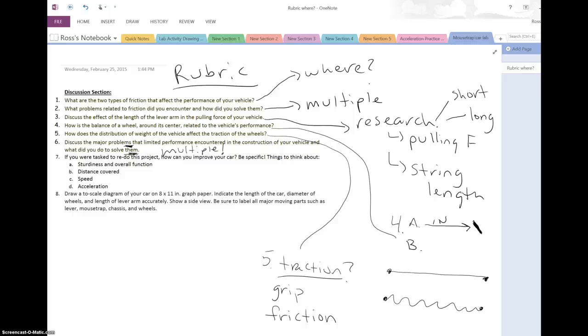Number seven, same idea: if you were tasked to redo this project, how could you improve it? Could you improve its sturdiness or overall function? Could you make it go farther, go faster, or accelerate quicker? Be specific. Don't just say 'yeah, we would change it to go further'—how would you do that? If you want to increase its speed, that's a great goal, but how would you do it? If your car wasn't sturdy or didn't work very well, how would you increase the overall function and sturdiness? We want to be specific in our answer, and you can come up with ones other than the examples given.